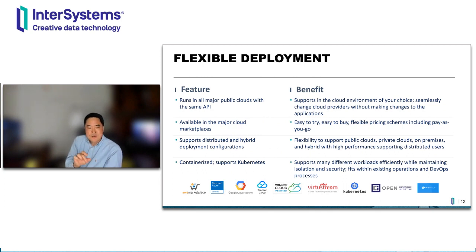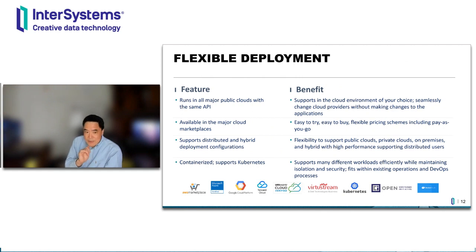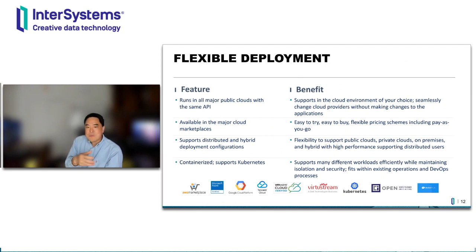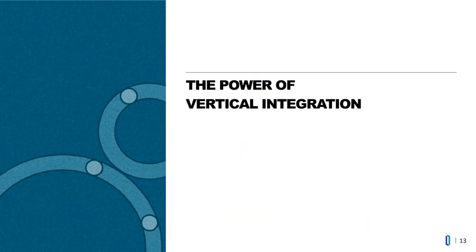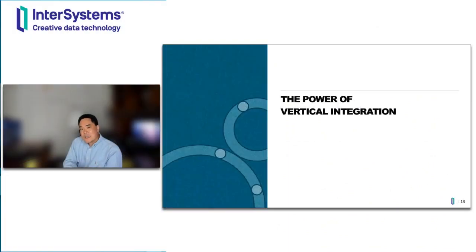Very few database vendors truly containerize their databases. We not only containerize our data nodes, we also containerize our cache nodes, with full Kubernetes support — including a Kubernetes operator on top of IRIS containers. But just deploying on every cloud, also known as cloud neutrality, is not enough, because most open source products claim the same. You can spin up a container or a Linux instance running open source software anywhere. That's true. The last pillar I'll talk about is the power of vertical integration.